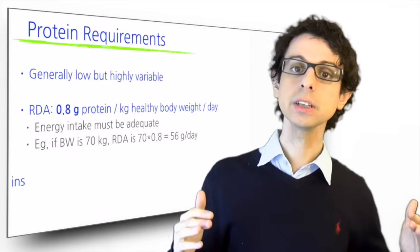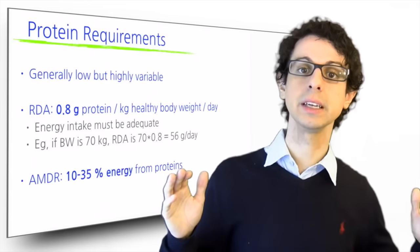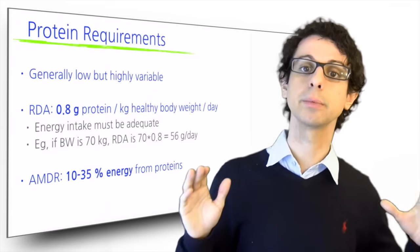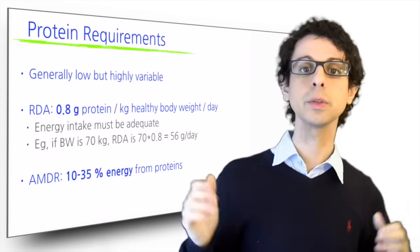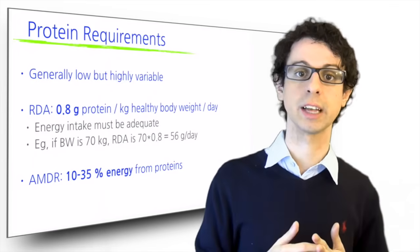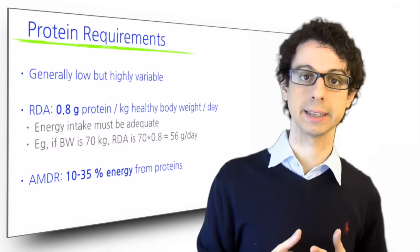An alternative rule of thumb is to express protein needs as percent of total energy intake, and make sure that proteins account for 10 to 35% of the total calories, which is the acceptable distribution range set for protein by the DRI guidelines.